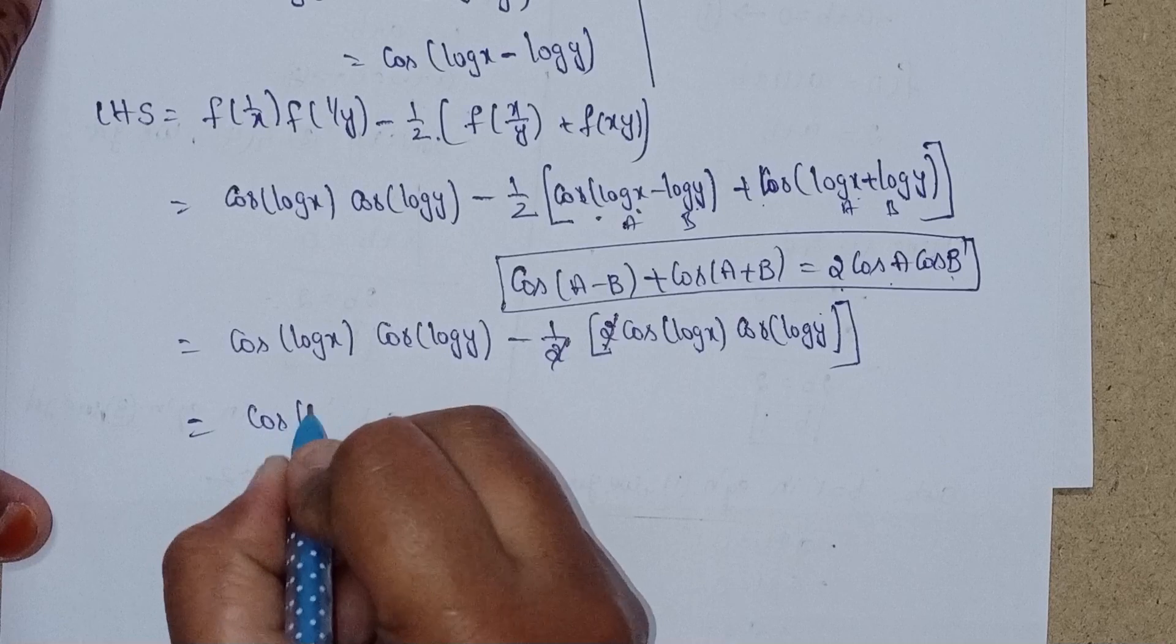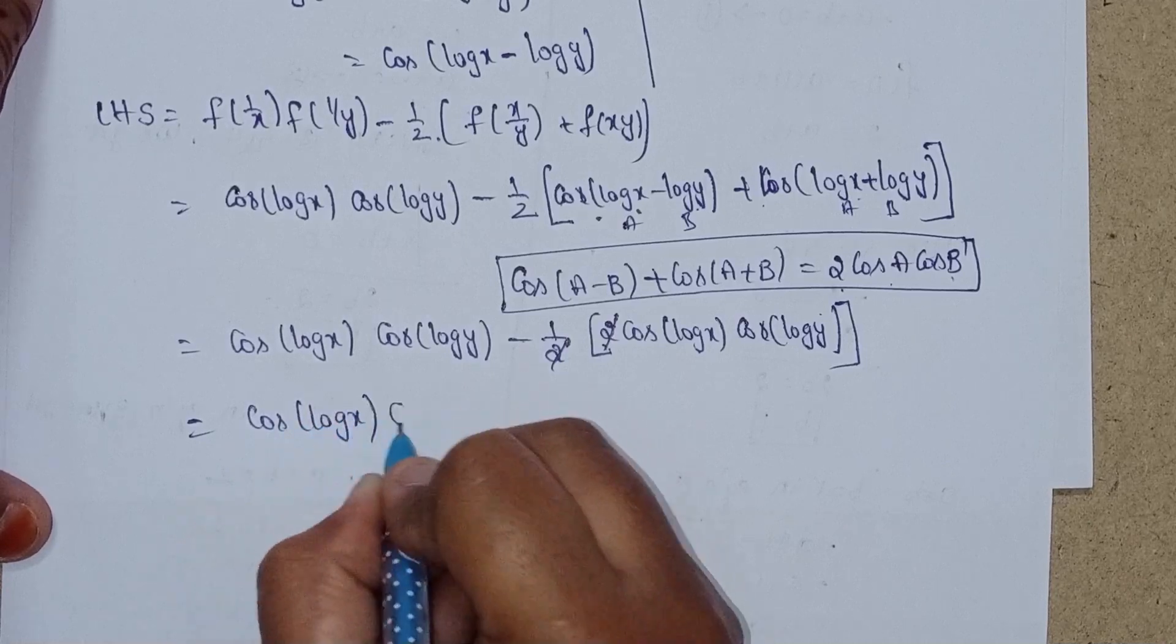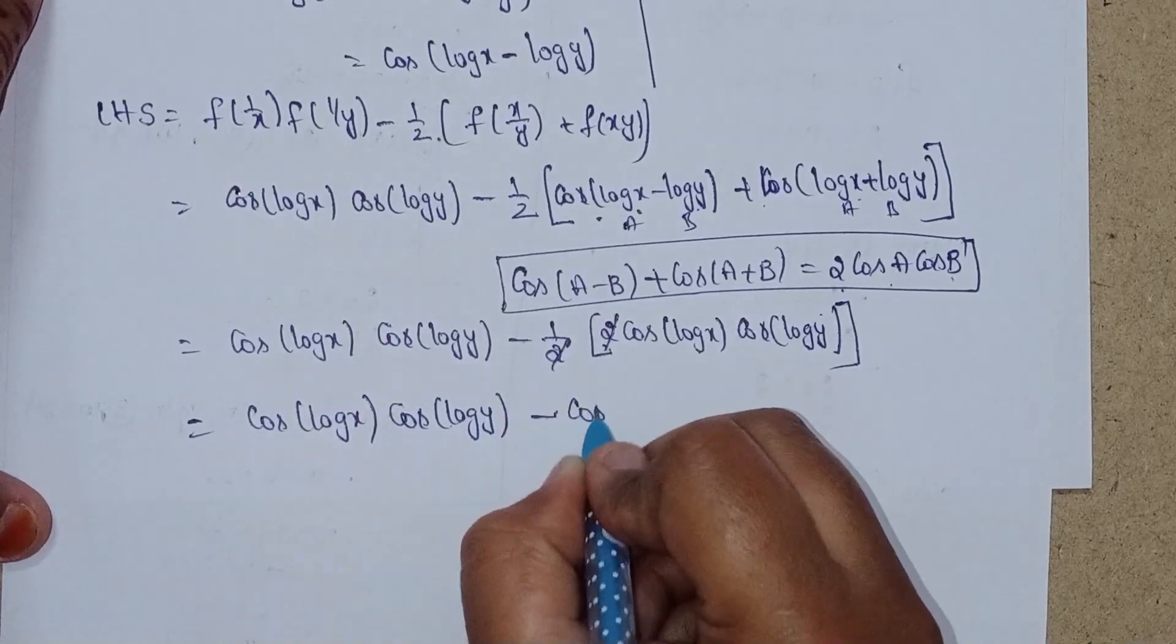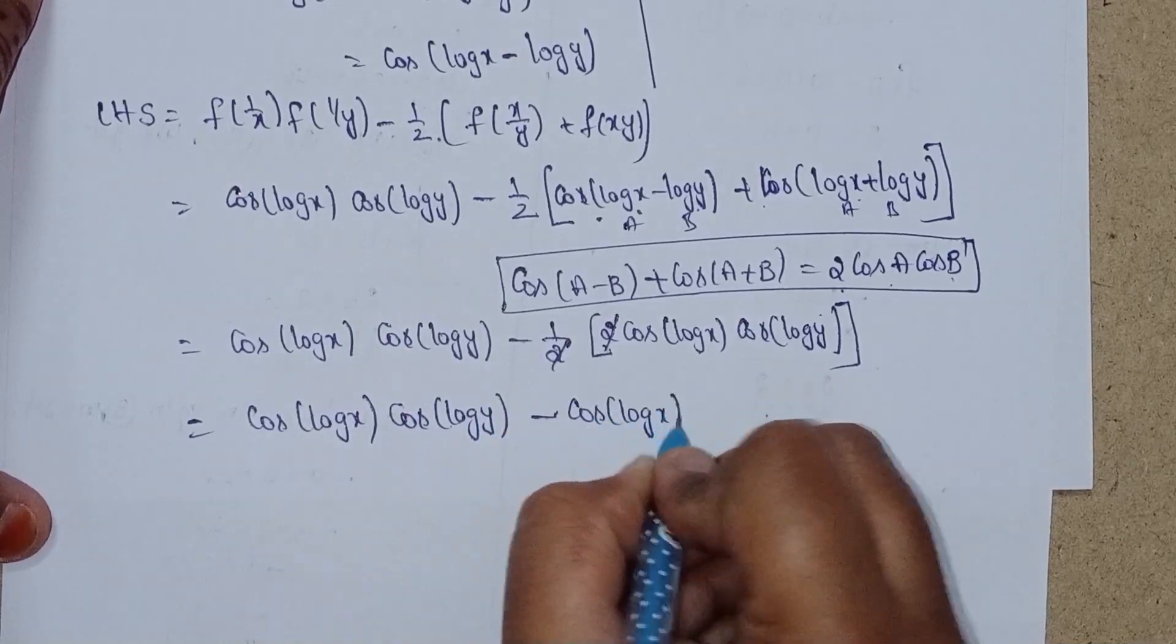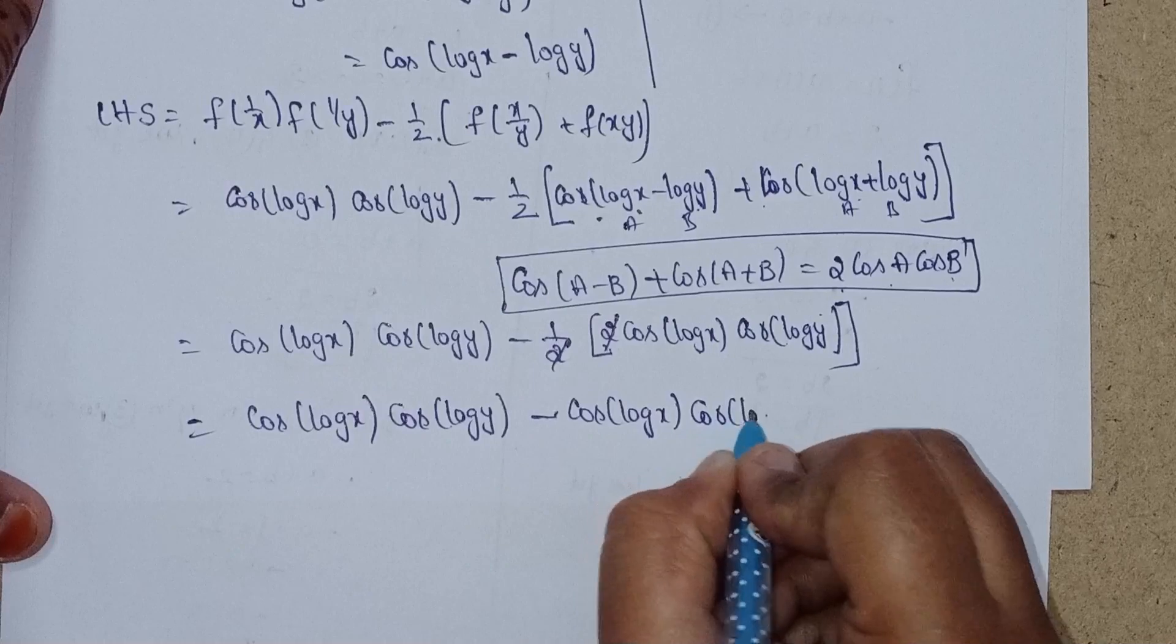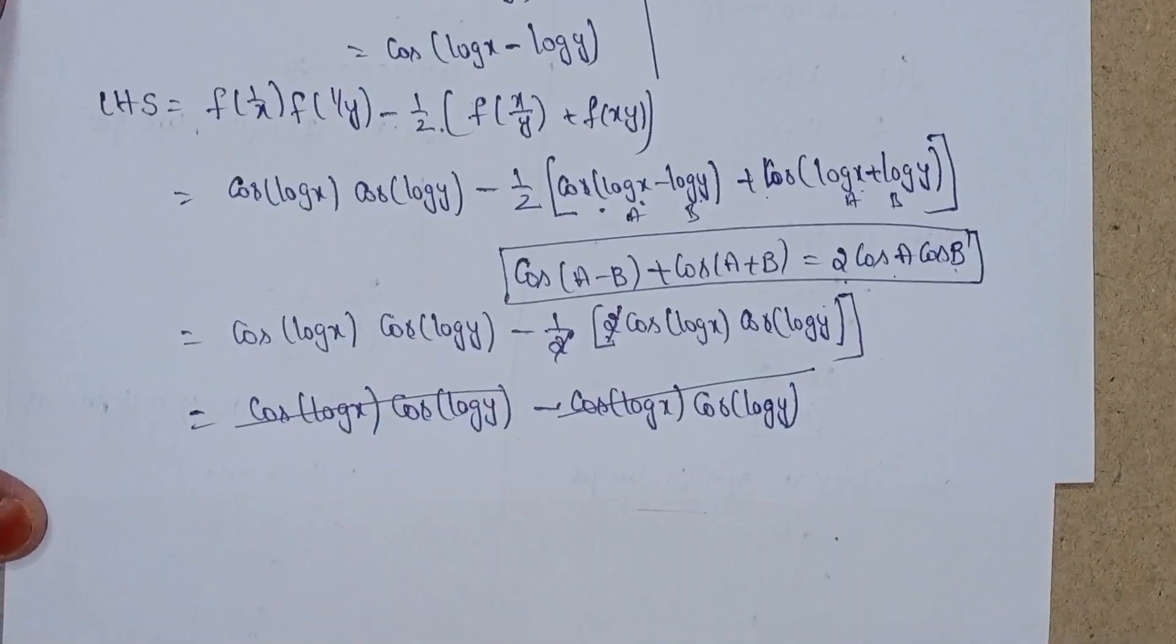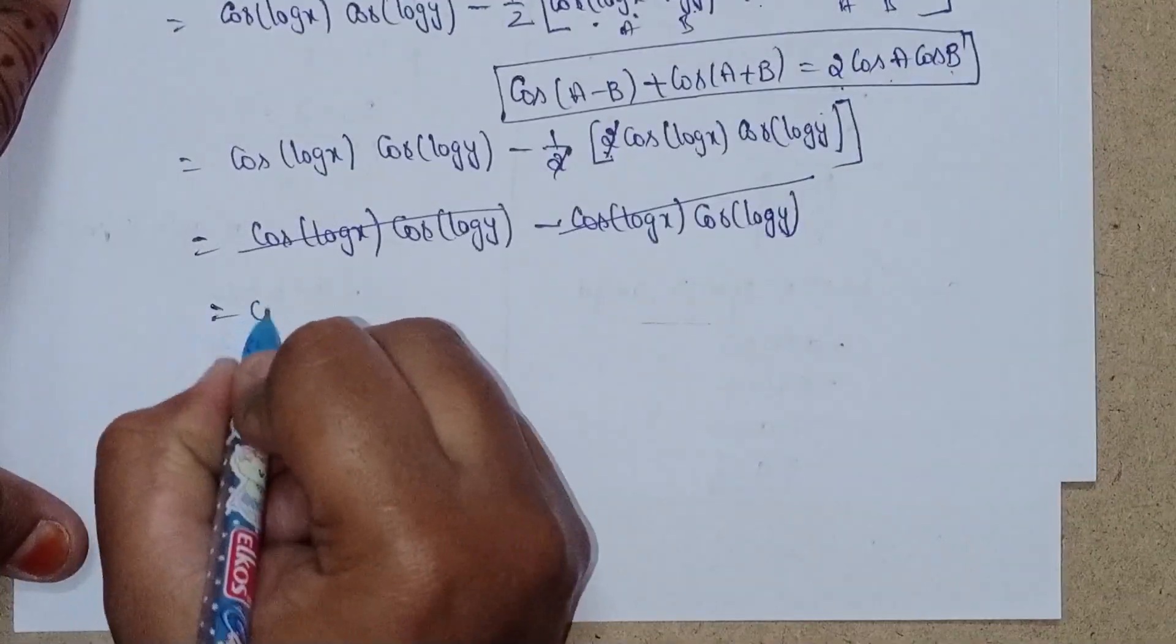We get cos(log x)cos(log y) - cos(log x)cos(log y) = 0.